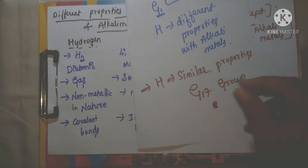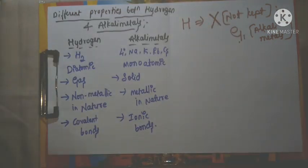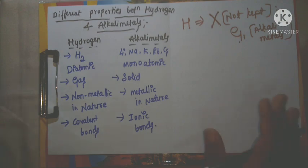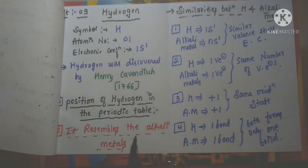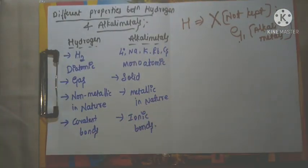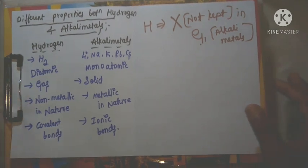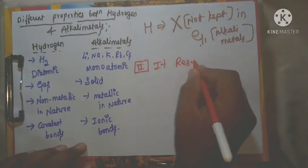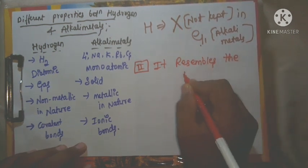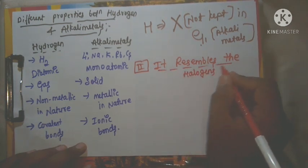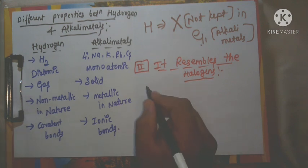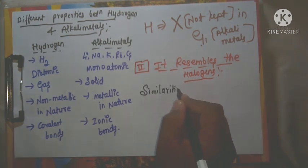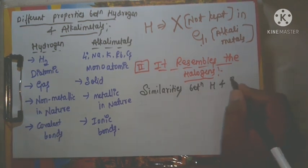Since hydrogen shows similar properties with the 17th group, we might consider keeping hydrogen there. But first, let us study the similarities between hydrogen and the halogens. Hydrogen resembles the halogens — that is, the 17th group elements. We will now discuss the similarities between hydrogen and the halogens. Halogens means group 17, including fluorine, chlorine, bromine, and iodine.